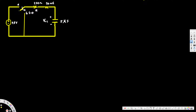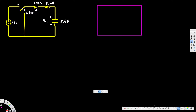In order to solve this problem, first we have to look at the initial conditions. When the switch is at position A for a long time, the capacitor is going to be fully charged and act as an open circuit, and the inductor is going to act as a short circuit. So when you draw the initial condition circuit, we have the voltage source, the 250-ohm resistor, the capacitor acting as open circuit, and the inductor as short circuit.